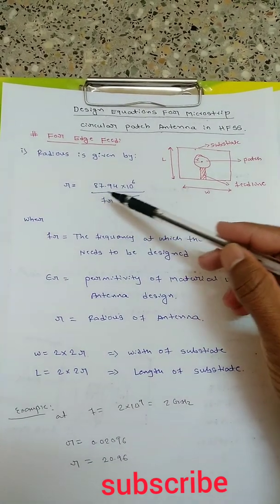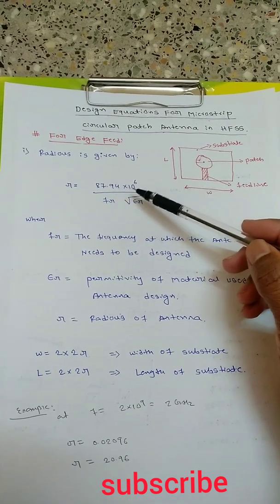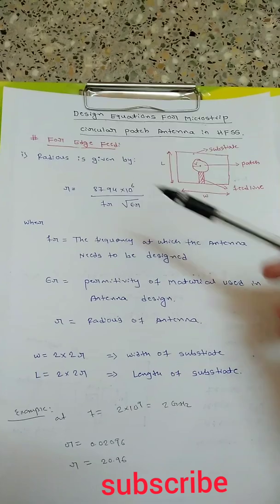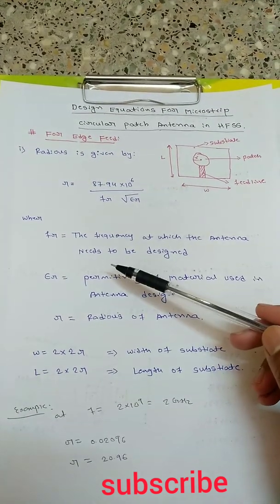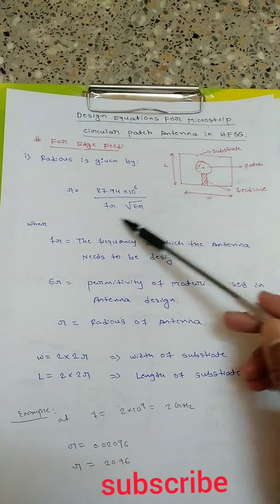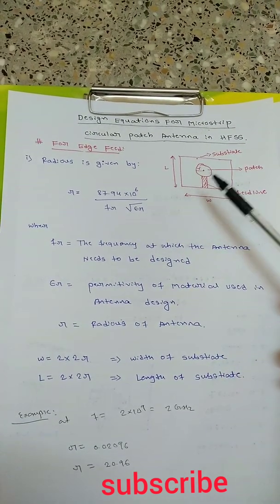Radius r is given by 87.94 x 10 to the power 6 divided by f_r x square root of epsilon_r, where f_r is the frequency at which the antenna needs to be designed.